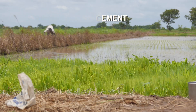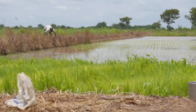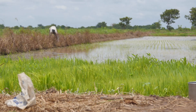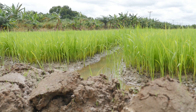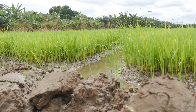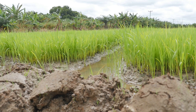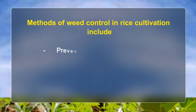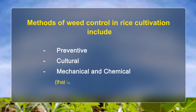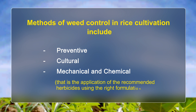Step 8: Weed Control. Weed the rice field at 3 and 6 weeks after seeding or transplanting. For best weed control, maintain water at a depth of 10 to 15 cm in bunded fields. Methods of weed control include preventive, cultural, and mechanical. Chemical control — application of recommended herbicides using rice formulations — should be the last resort when managing weeds.